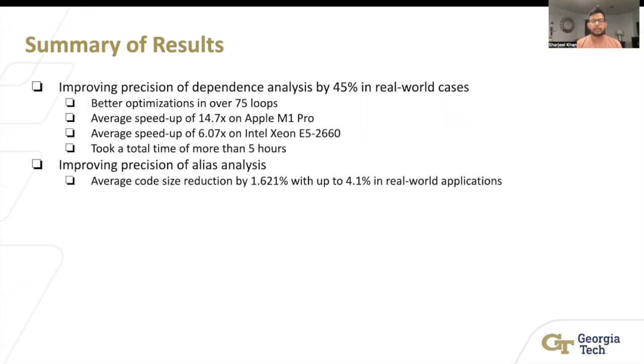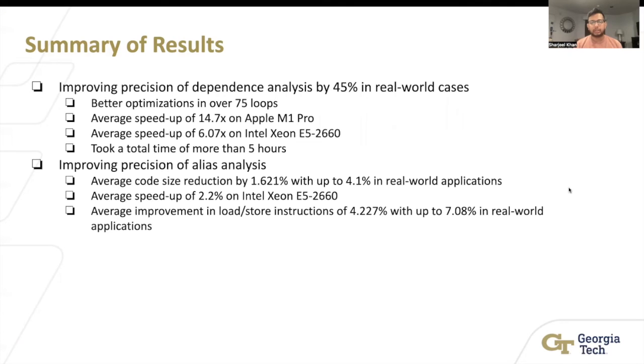For alias analysis, we saw an average code size reduction by 1.6% with up to 4.1% in real world applications, average speedup of 2.2%, and an average improvement in load store instructions of 4.2% with up to 7.08% in real world applications. Of course, it took a little more than six hours to verify these cases, which is not a lot more compared to the dependency ones. It could be much simpler, I would say. While the dependency would have so many constraints and you could just keep on doing them back to back.